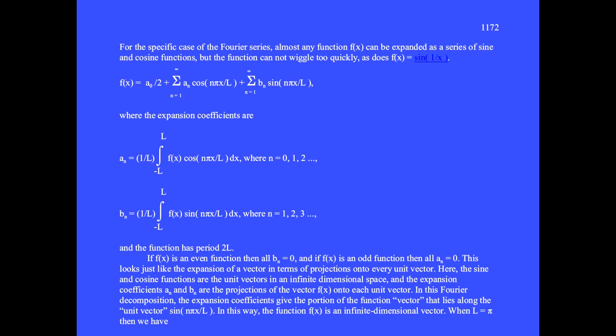If f of x is an even function, then all the coefficients bn are 0. If f of x is an odd function, then all the coefficients a sub n are 0.